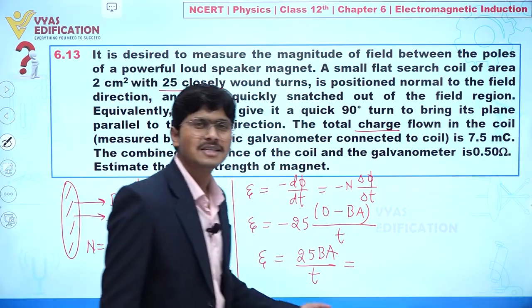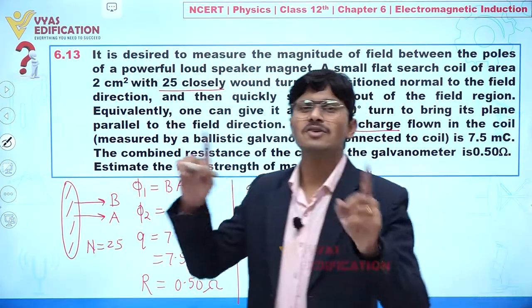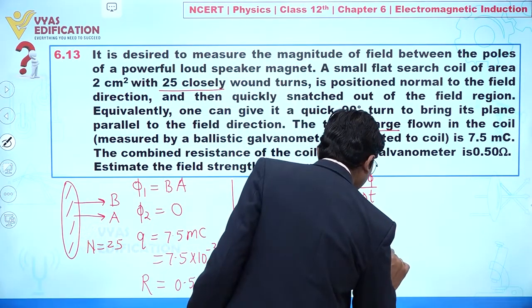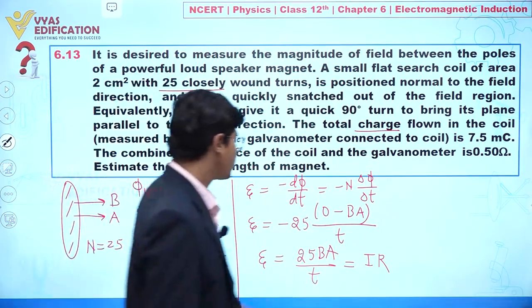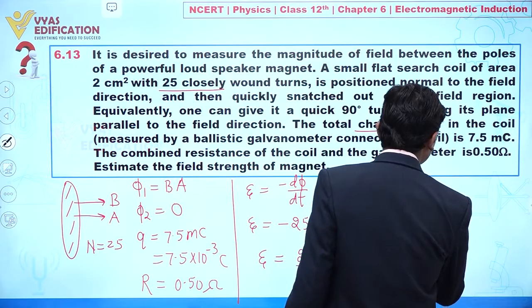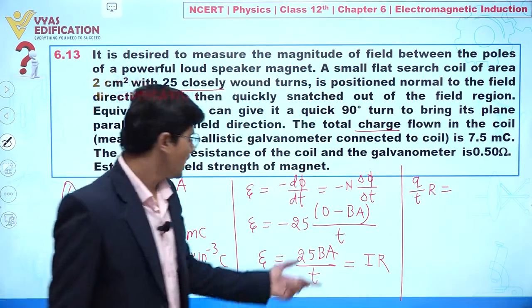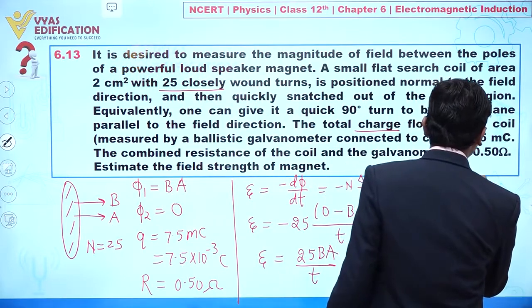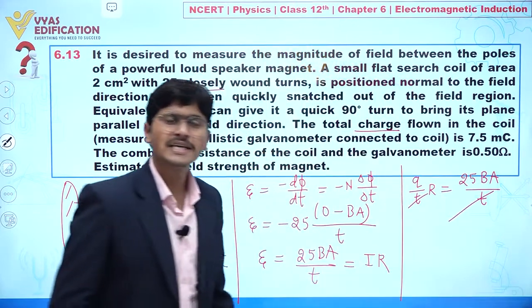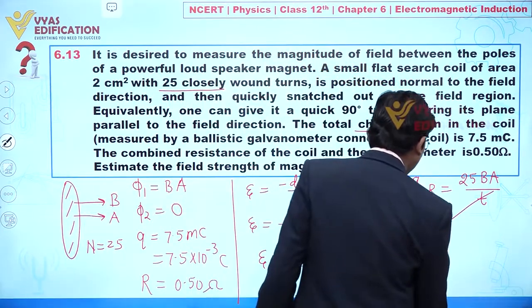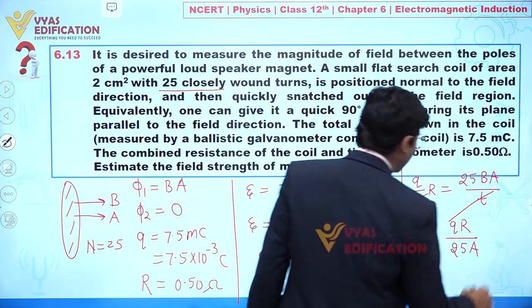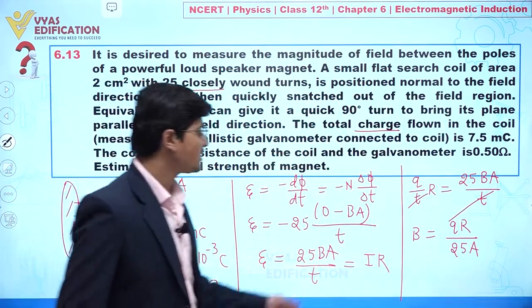This induced EMF in a closed loop is also equal to V = IR. Instead of current I, we can write I = Q/t, so we have (Q/t) × R = 25BA/t. The t cancels from both sides, and we get the value of B as B = QR / (25A).